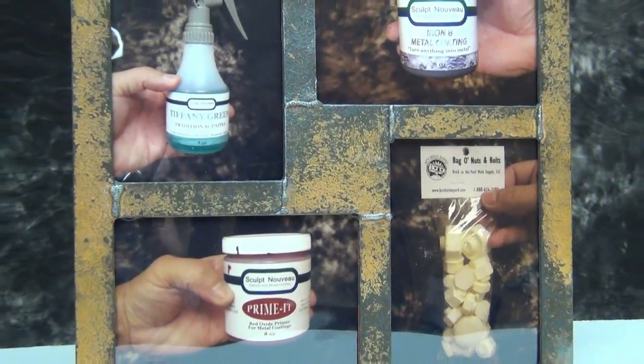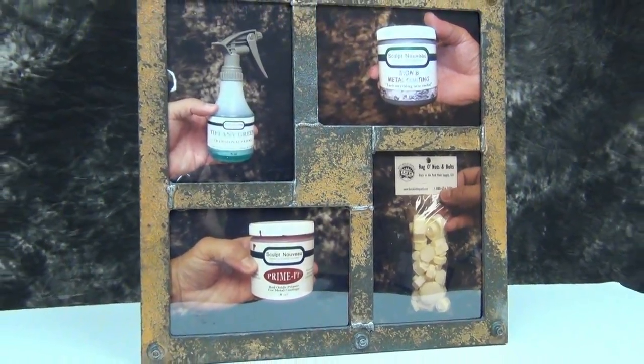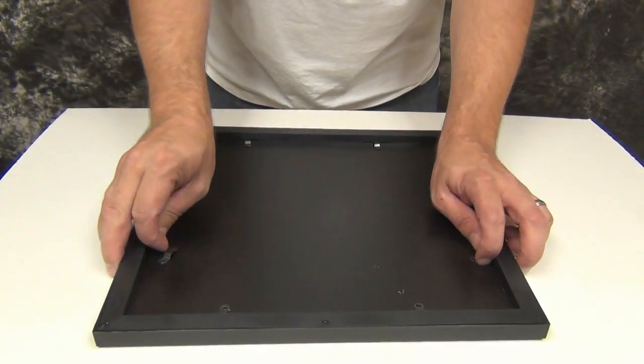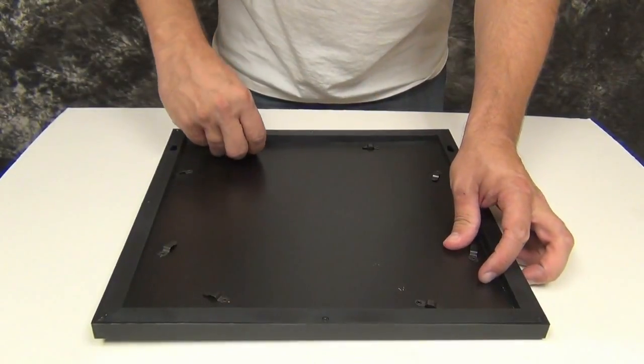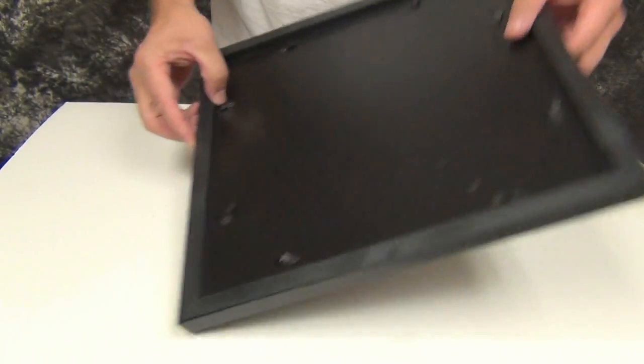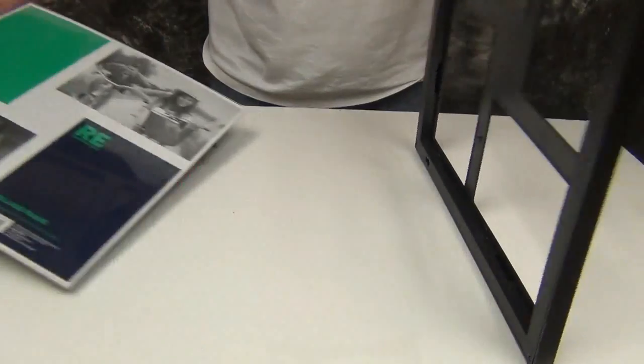Now we've covered the rust technique before, but in this video we're going to show some additional techniques to really punch up the realism on props like this where you're simulating rusted iron or steel.